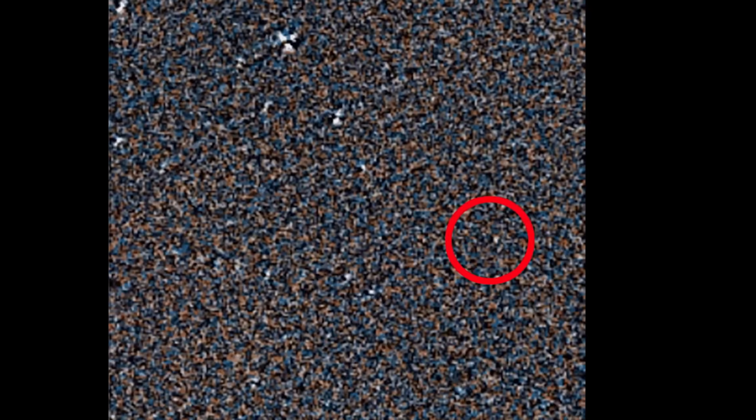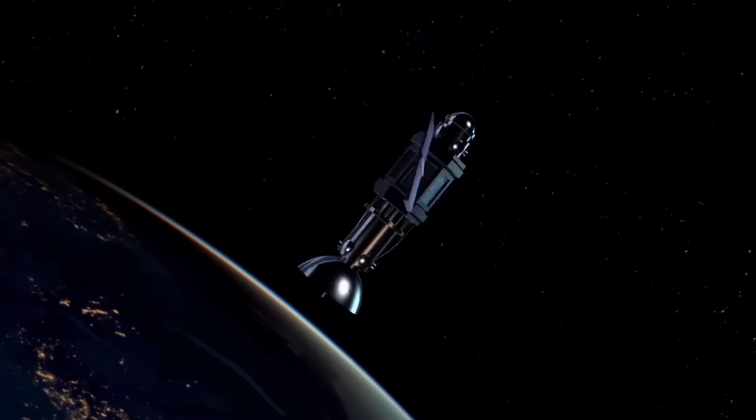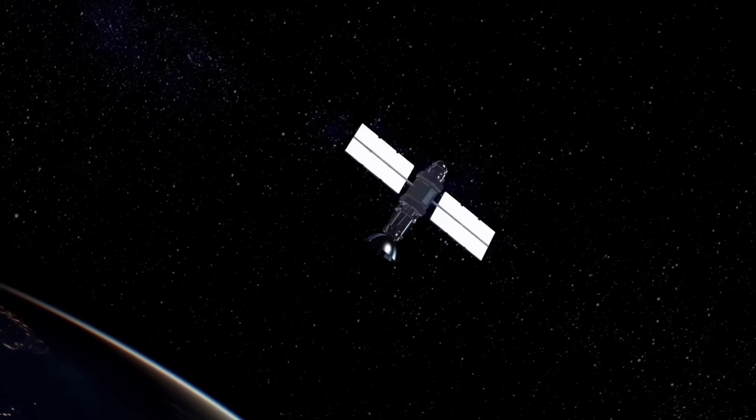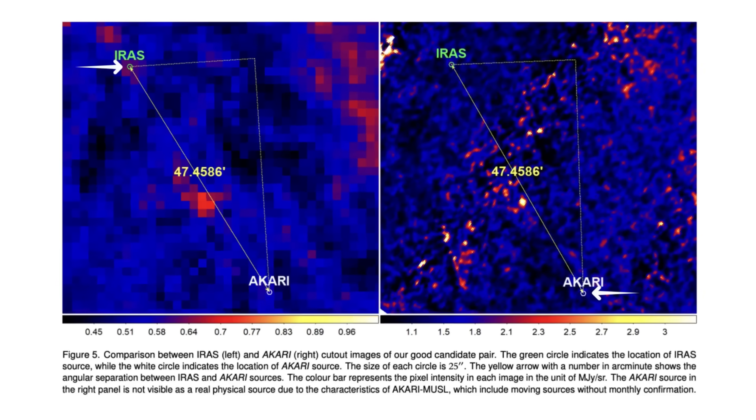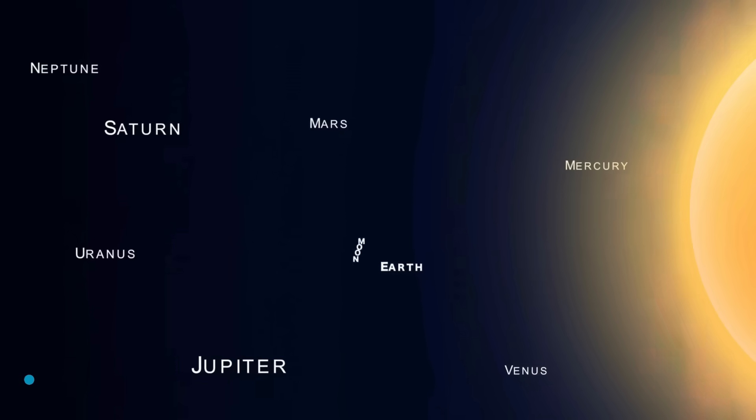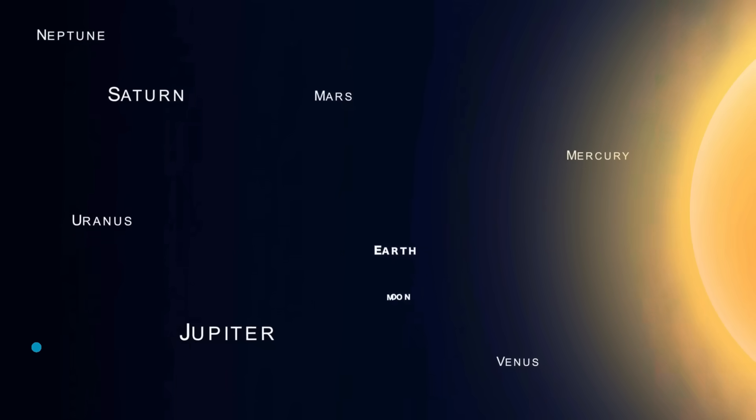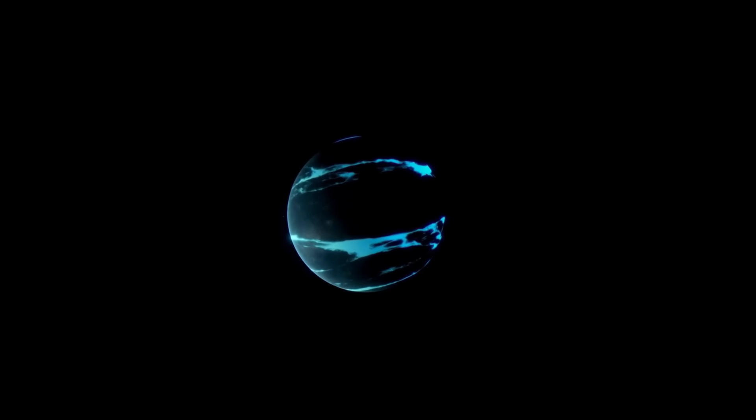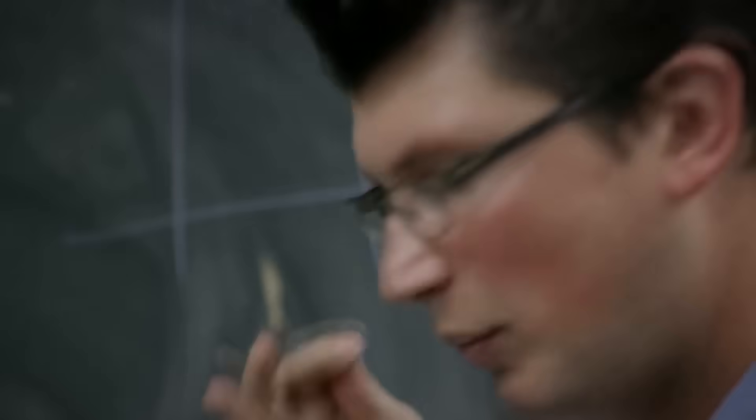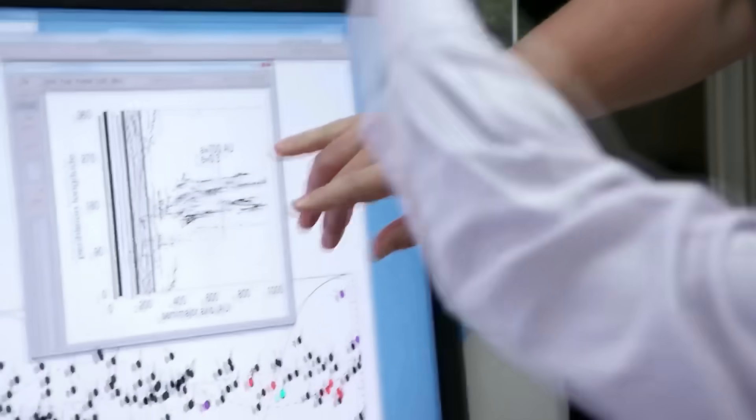It's just a tiny speck, a faint dot hidden in old telescope data from two sky surveys taken 23 years apart. And yet, this faint dot might be one of the biggest discoveries of our time. Because if this turns out to be what scientists think it is, it could be the long-rumored Planet Nine. But why do astronomers even think Planet Nine exists in the first place?